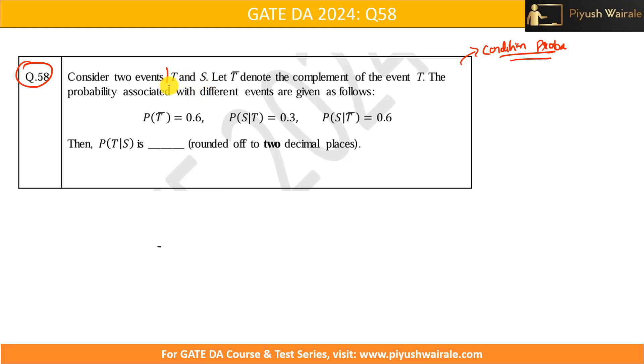Consider two events T and S are the two events. Here we have a T bar like this. So, this basically denotes the complement of event T. So, either we can define complement as like this T dash or T bar, whatever the notation may be, but they can mention in the question like this, okay. So, T bar denotes the complement of the event T. The probability associated with different events are given as follows.